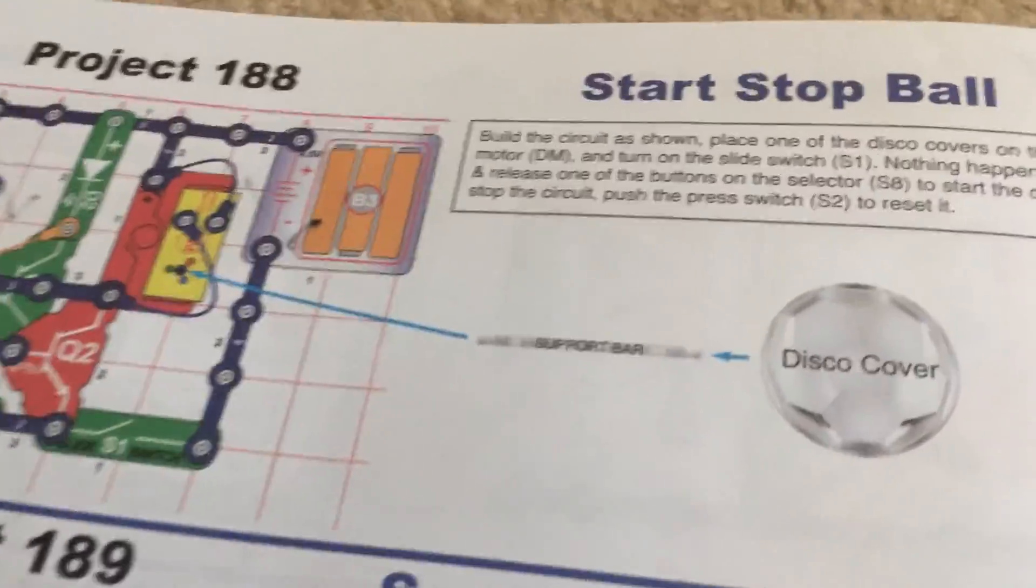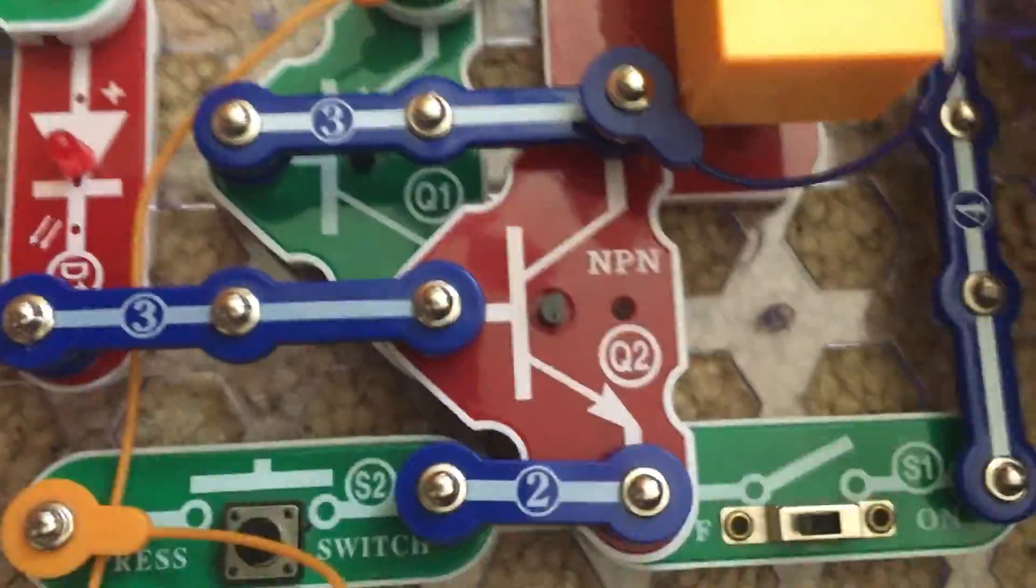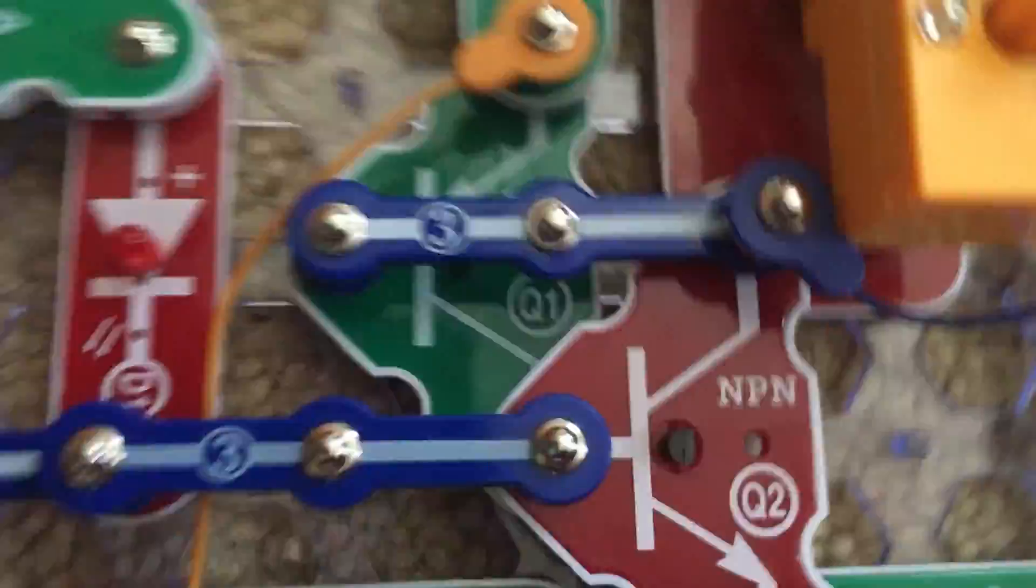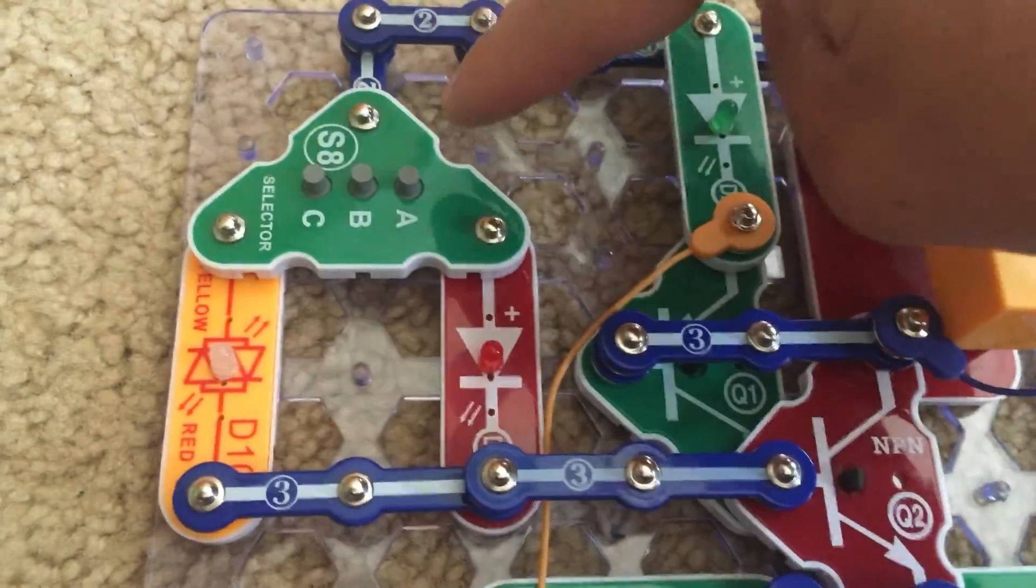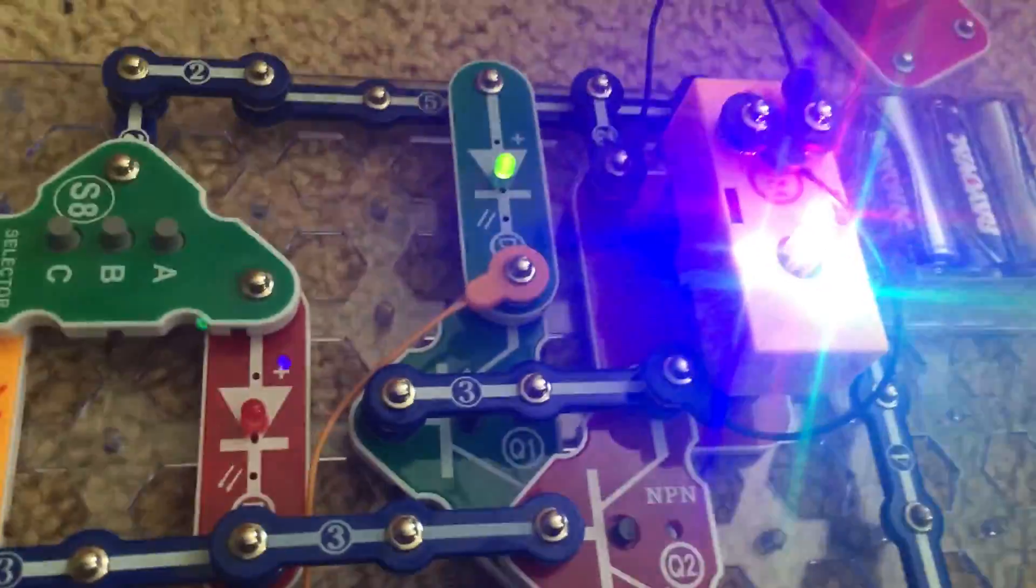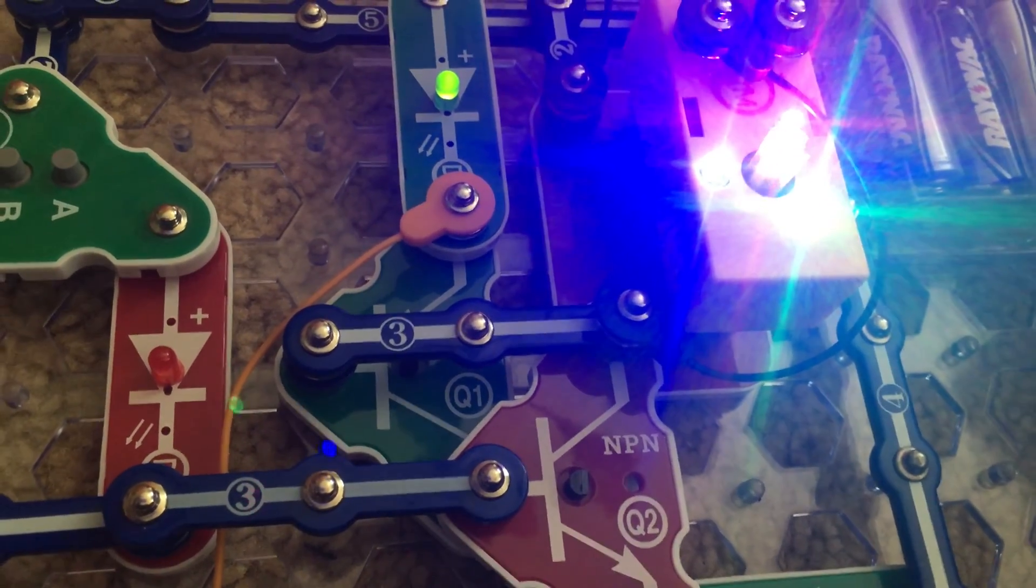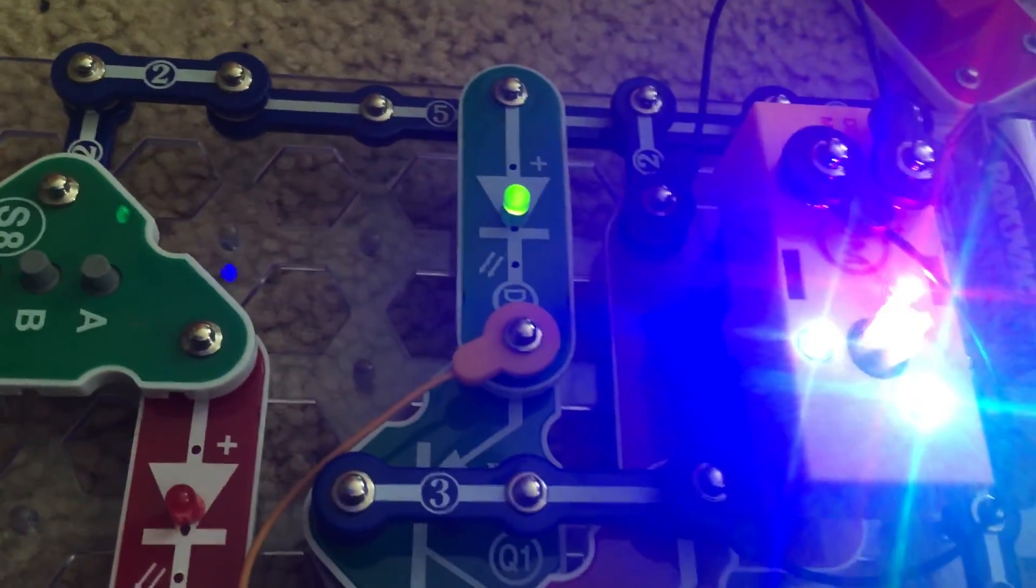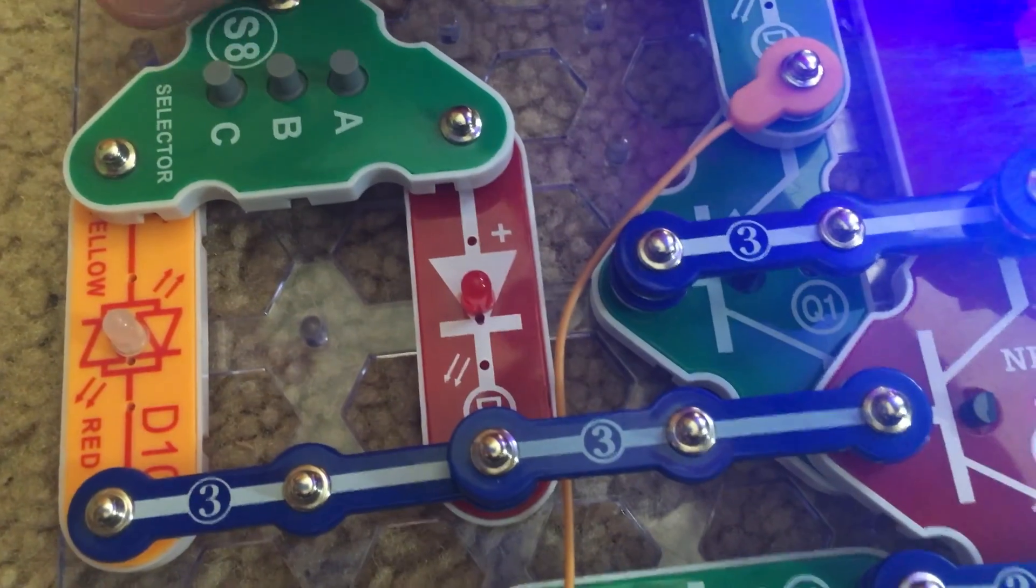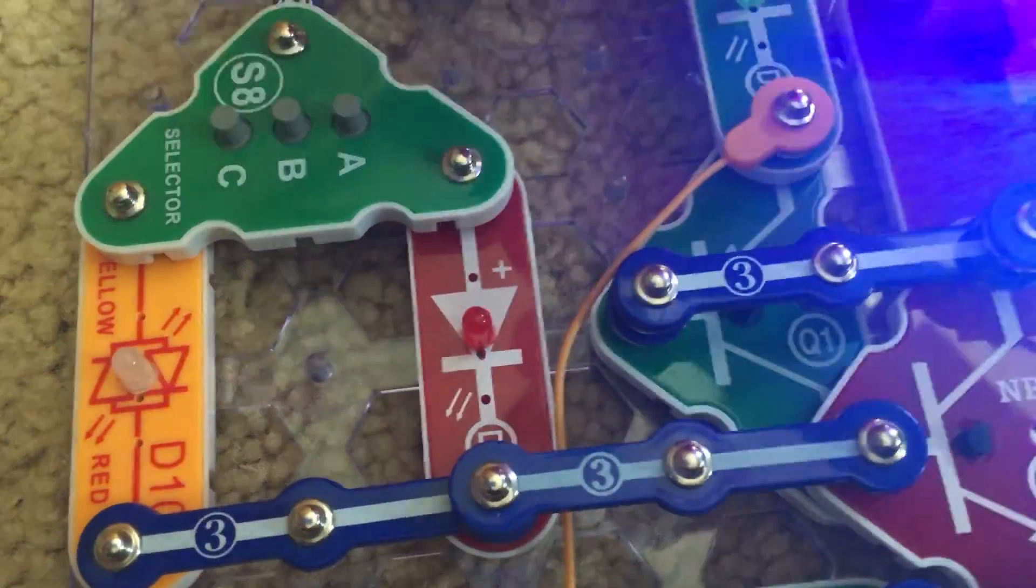188 is start, stop, ball. Let's see what happens. Turn on the slide switch. Nothing. But the instructions want us to push any of the buttons on the S8 module. And look what happens. The disco motor spins and the green LED lights up. The yellow and red LEDs do not. They are only activated by pushing the selector buttons.